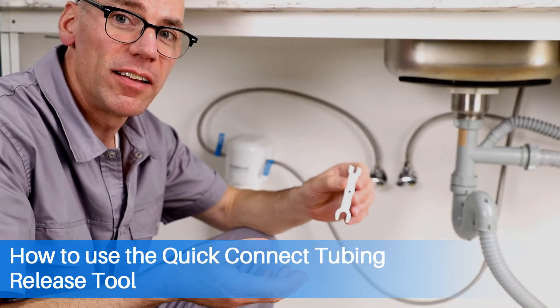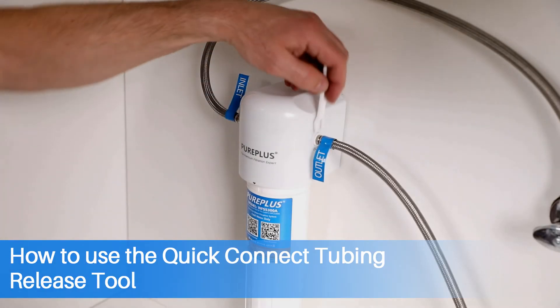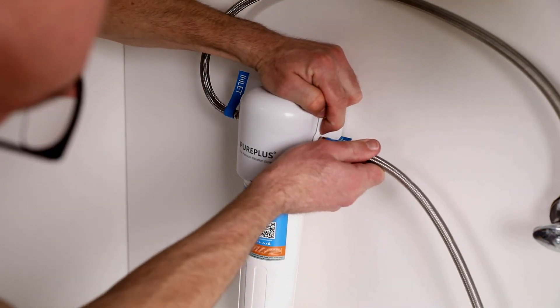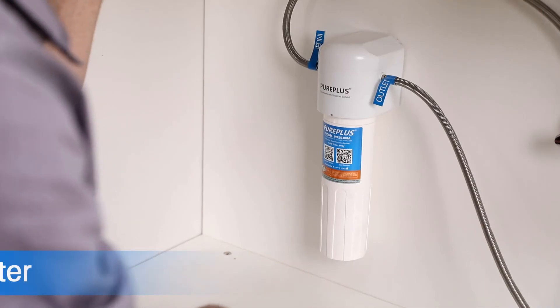Okay, next, let's see how to use the Quick Connect tubing release tool. If you need to disconnect the hose, use the Quick Connect tubing release tool. Press down firmly on the push lock fitting.